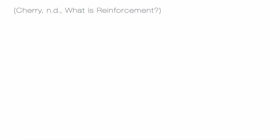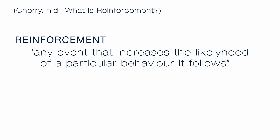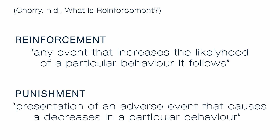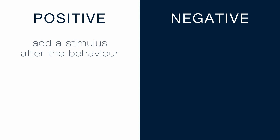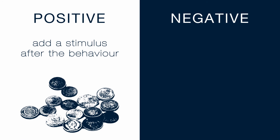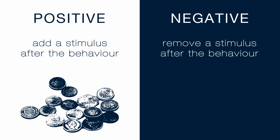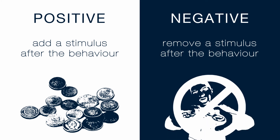As stated by Cherry, reinforcement is any event that increases the likelihood of a particular behaviour it follows, whereas punishment is the presentation of an adverse event that causes a decrease in a particular behaviour. Each concept can either be positive or negative. A positive reinforcer or punisher aims to add a stimulus after the behaviour, such as getting a tip from providing quality service at a restaurant, whereas a negative reinforcer or punisher aims to remove a stimulus, like not being allowed to play video games because you got in trouble at school.